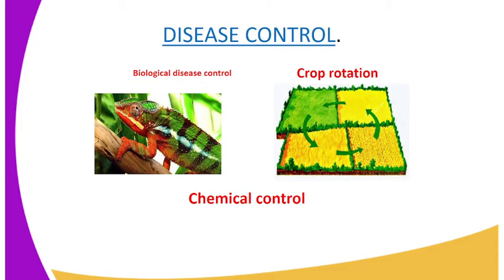For disease control, we have the biological method and the chemical method, where drugs are spread onto the crop to control the disease. Crop rotation is another method of disease control.